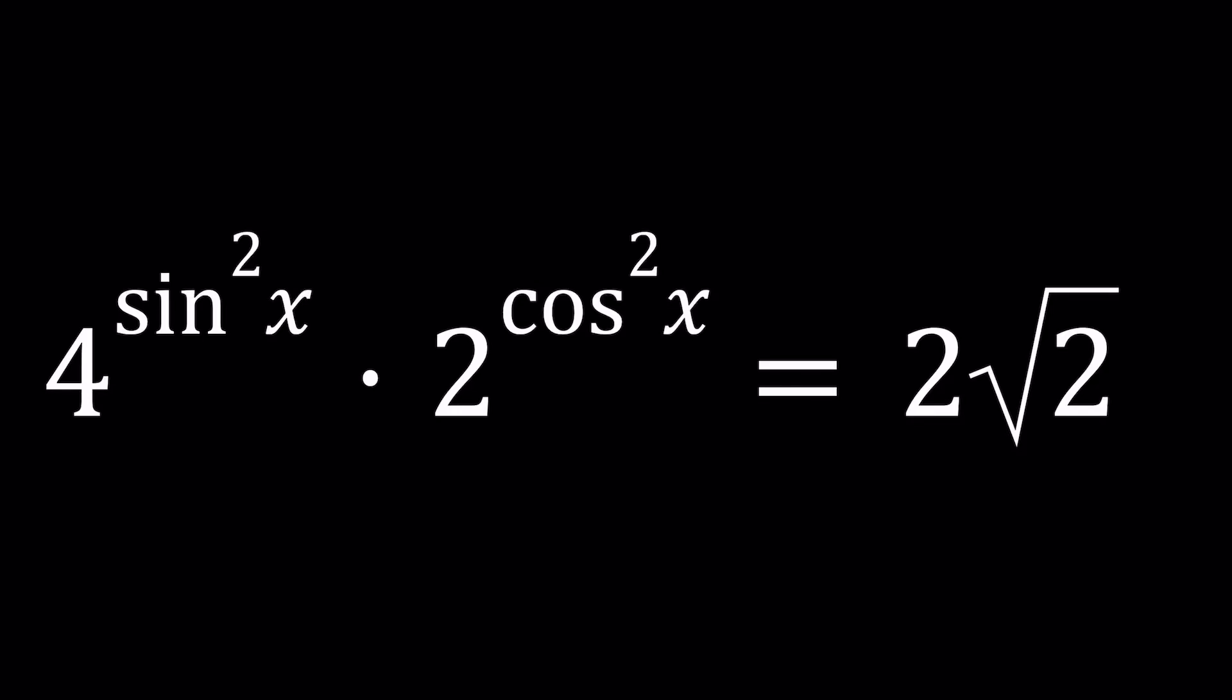Hello everyone. In this video, we're going to be solving a trigonometric equation which is also exponential. We have 4 to the power sine squared x times 2 to the power cosine squared x equals 2 times the square root of 2, and we are going to solve for x values.